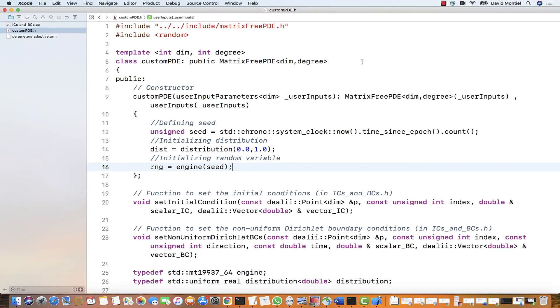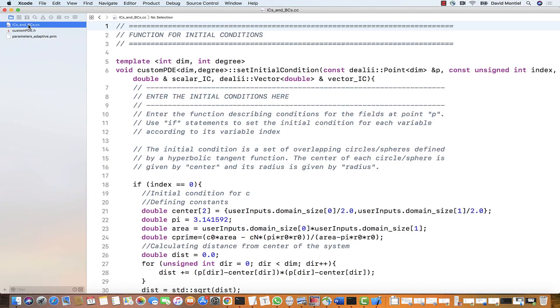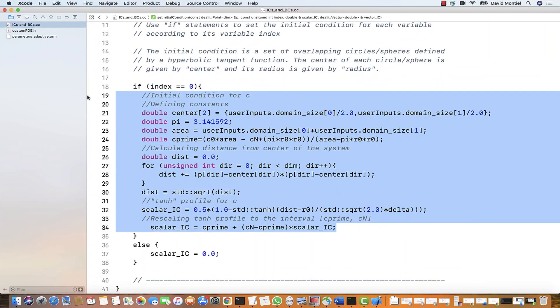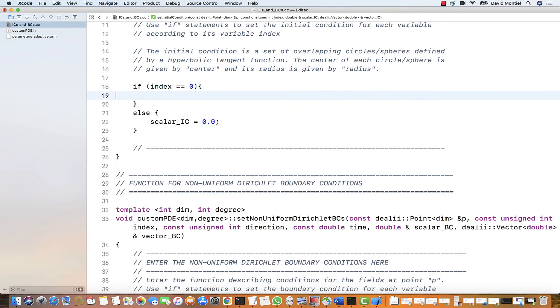We are done here. Now let's go to the initial conditions file. And this is going to be very simple. For the variable index zero, which is the concentration, we will remove everything and simply define it as the average plus a random number between minus one and plus one. And this is what this term here does. And this initial conditions function will be called for each point of the mesh. And each time it will pick a different random number.